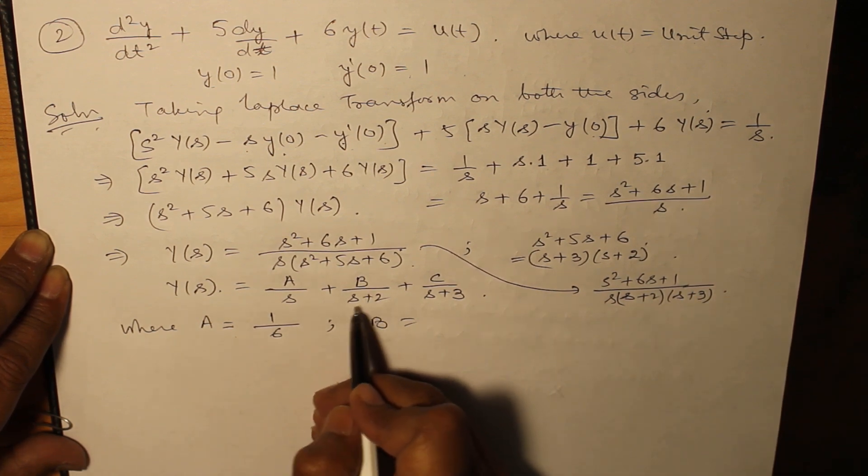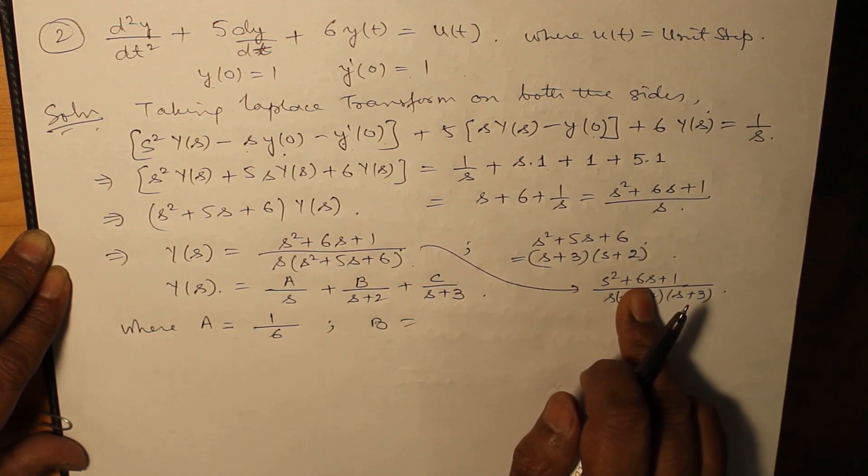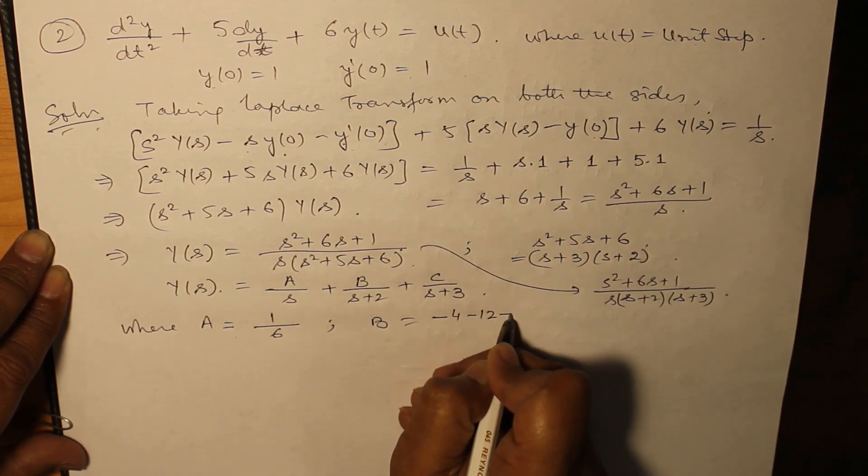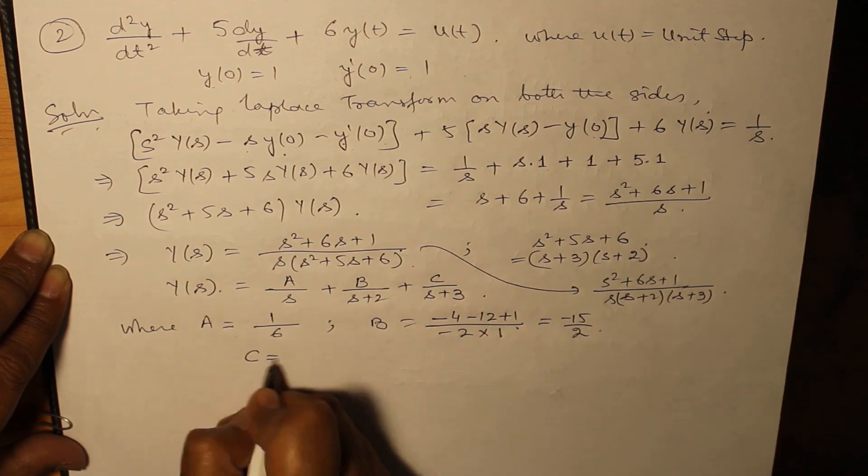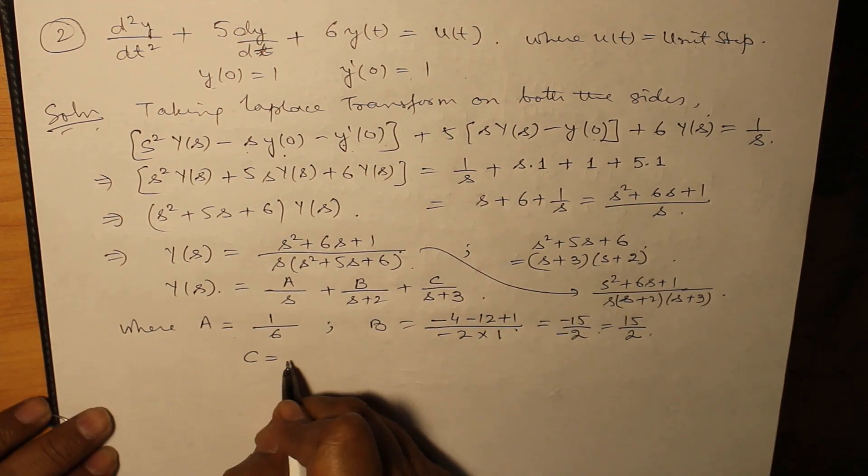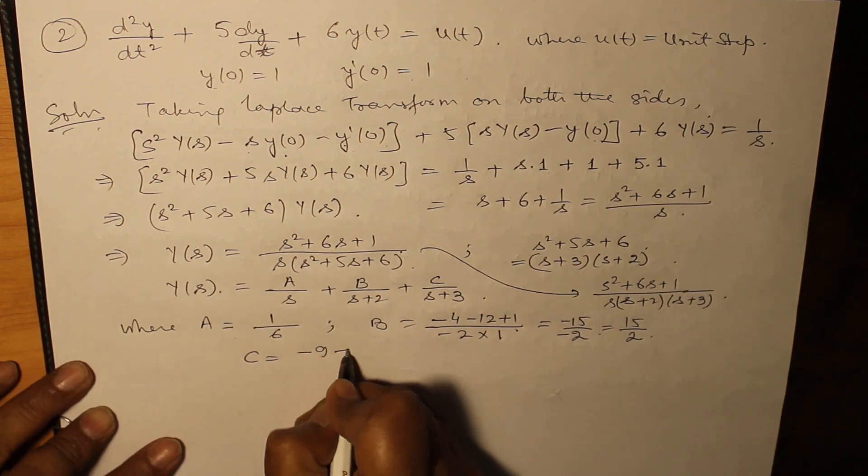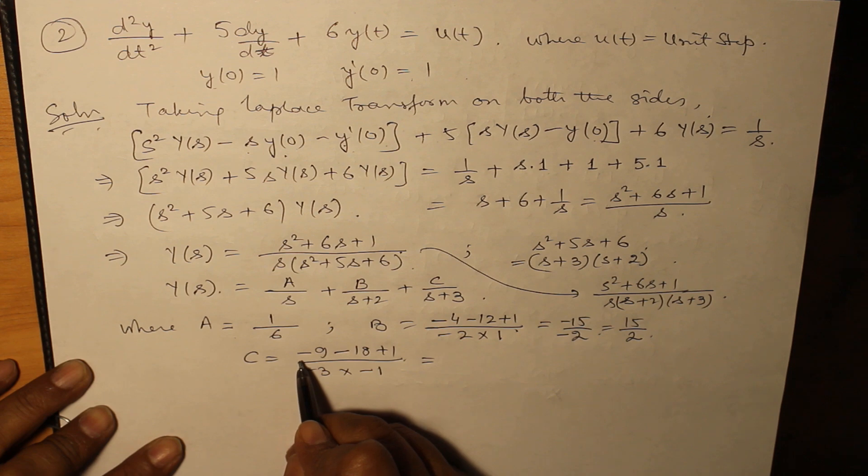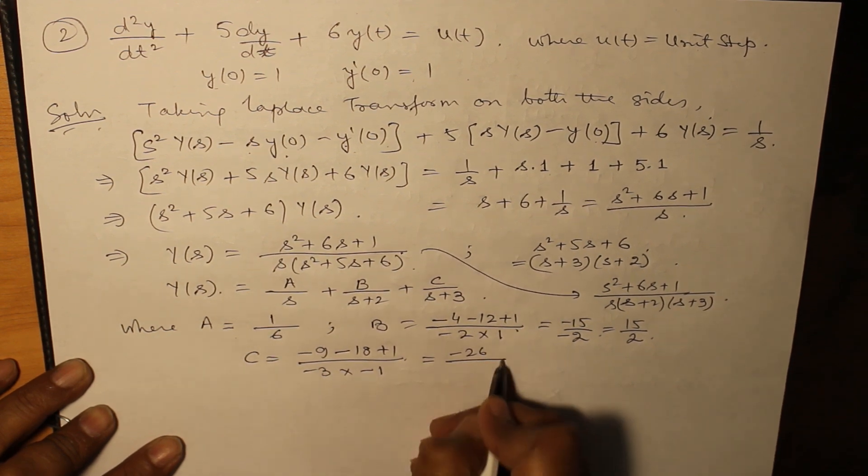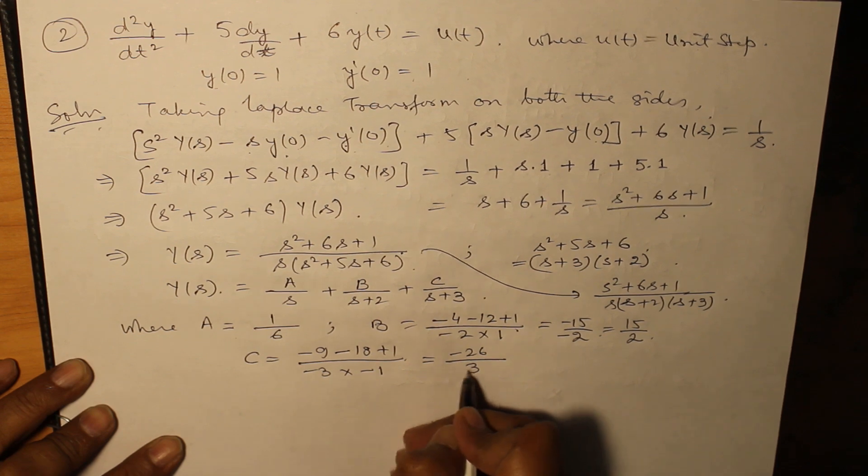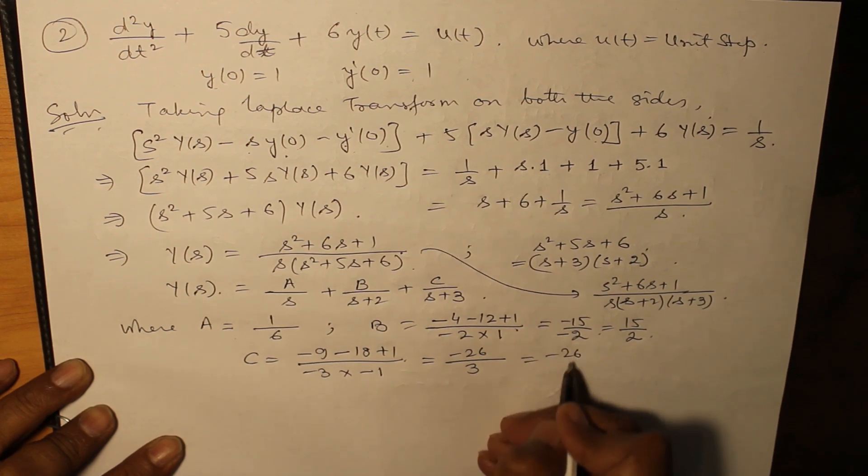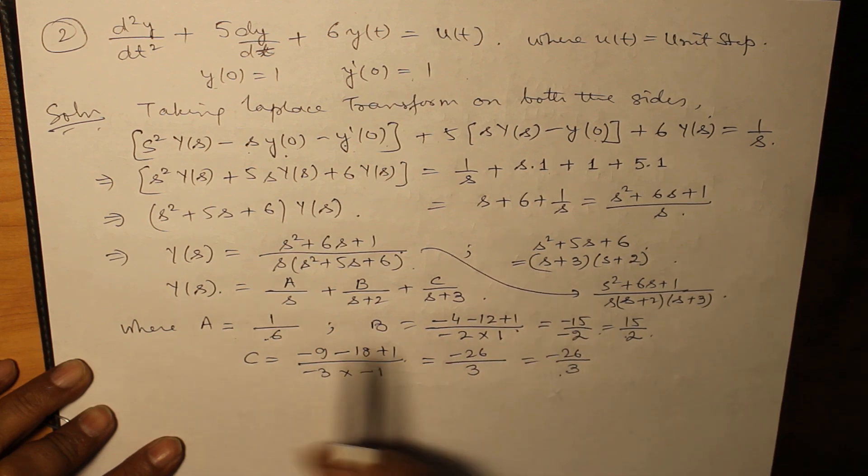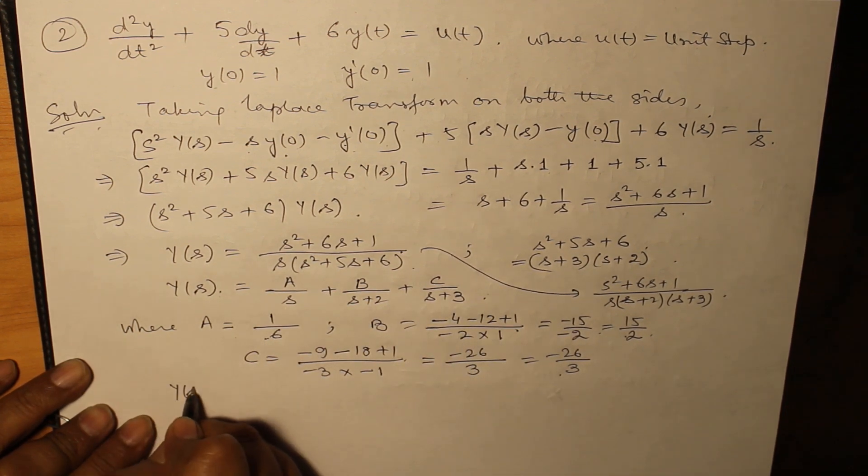Now we want to find out B, so s + 2, put a hand over here, s is equal to -2 you have to put in the equation, which gives you (-2)² - 12 + 1 that is -26 over (-2)(1), so -26/3. A is 1/6 and C is 15/2.